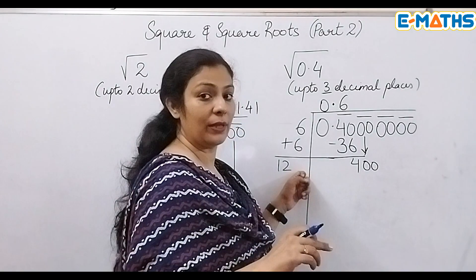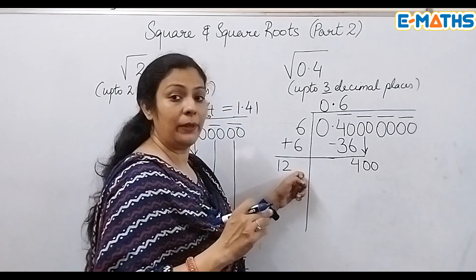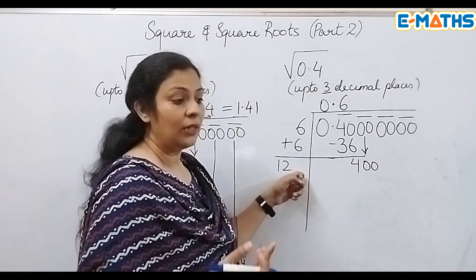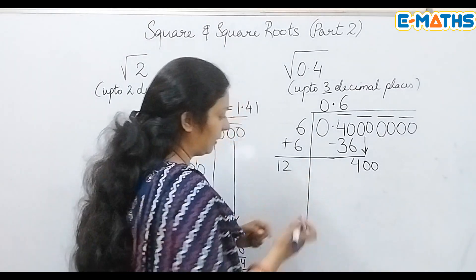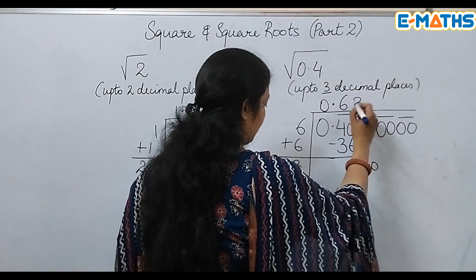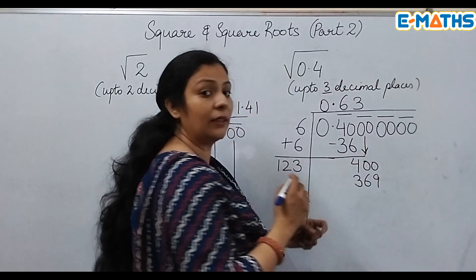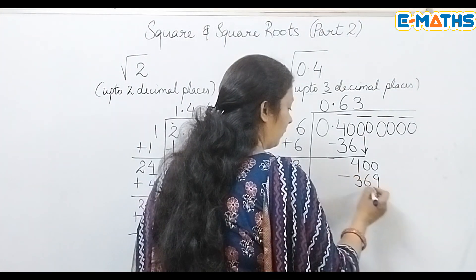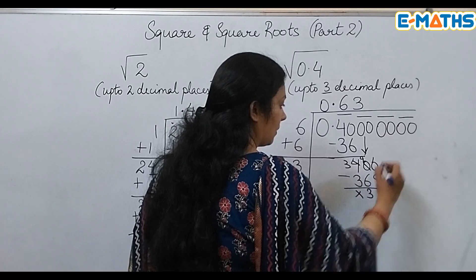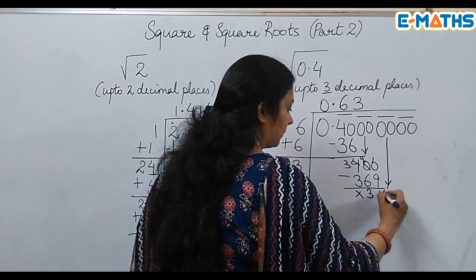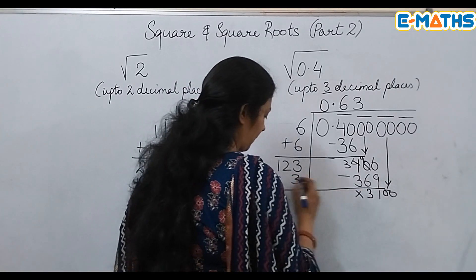Don't forget to add the numbers on the left-hand side, otherwise you won't be able to continue. I need to take a ones-place number which when multiplied gives me 400 or a number lesser. If I take 1: 121×1 = 121. If I take 2: about 244. If I take 3: 123×3 = 369. I'll take 3 and subtract: remainder is 31.